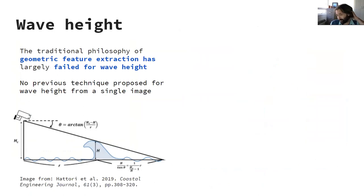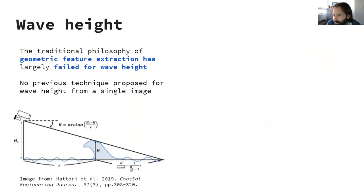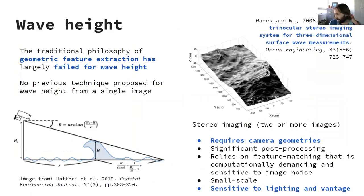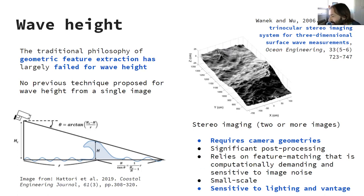But wave height has always been a problem. The traditional philosophy of extracting wave height from remotely sensed data using geometric feature extraction combined with a physically-based model hasn't tended to work very well. No previous technique proposed for wave height has been suitable for estimating from a single image — they always require time series. Stereo imaging is of course a way to get at this in specific examples, but when you have two or more cameras with known geometries, it is possible to use feature matching to solve the stereo correspondence problem. However, it tends to be very sensitive to lighting and is also very computationally demanding, so it has so far tended to be applied only at very small scales.